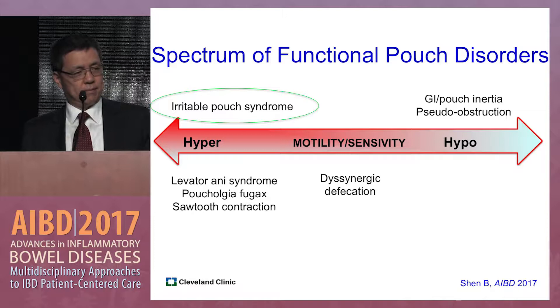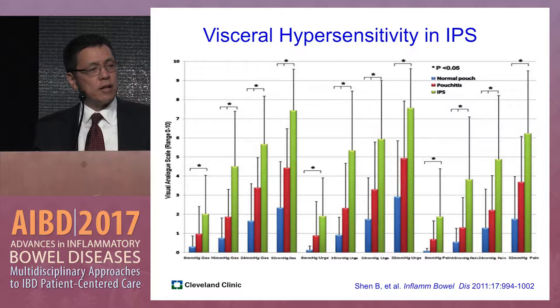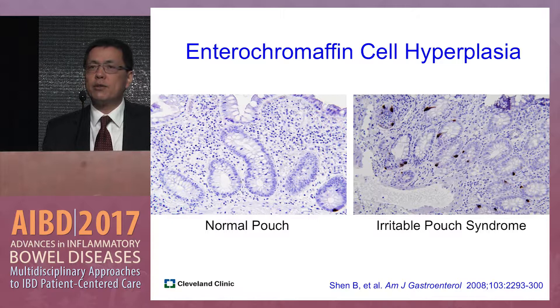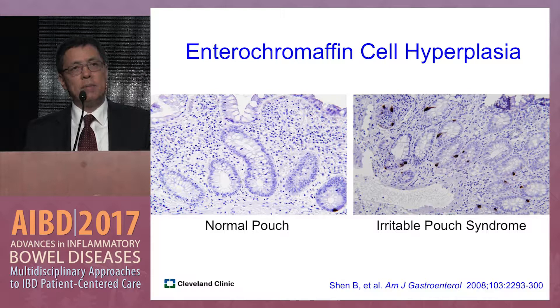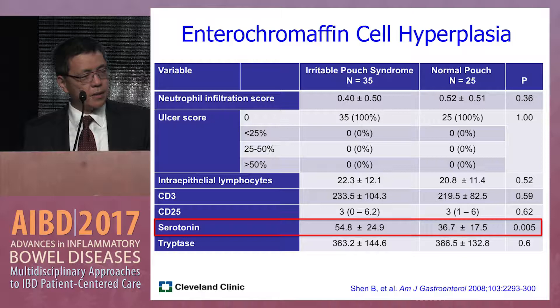We use the Barostat tool to detect visceral hypersensitivity. Studies show that people with irritable pouch syndrome have hypersensitivity in terms of gas, urge, and pain. When you do the biopsy, you can ask the pathologist to stain the EC cells — enterochromaffin cells — as there may be EC cell hyperplasia as well as mast cell hyperplasia. These slides show the serotonin-expressing EC cells.